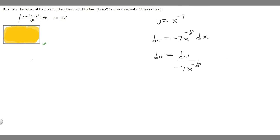Now what we want to do is rewrite our integral. So what we have is secant squared, and we're replacing 1 over x to the 7, because it's u, with the actual letter u.